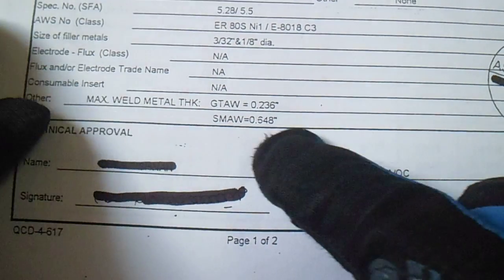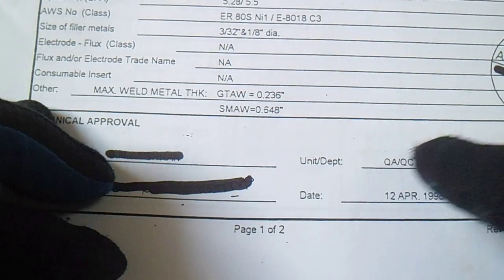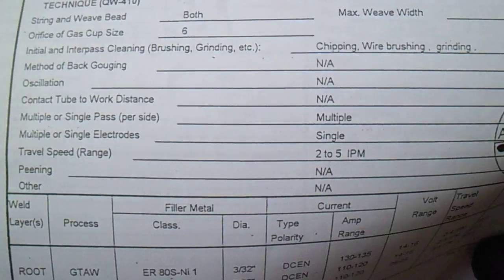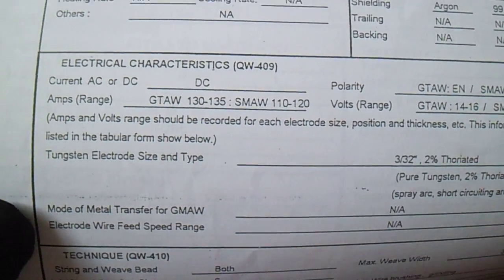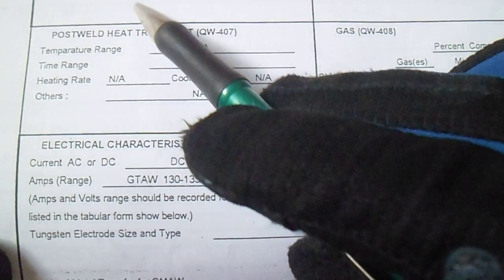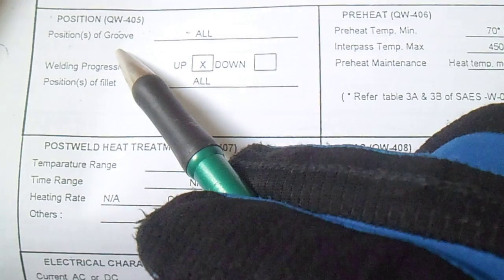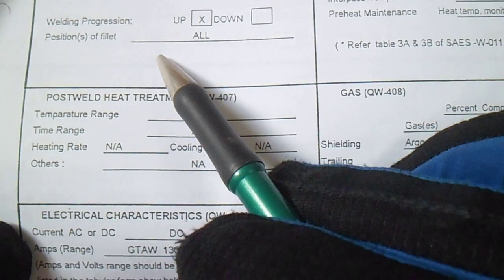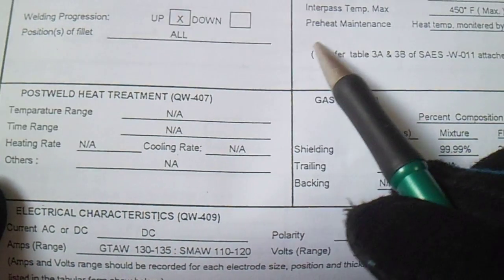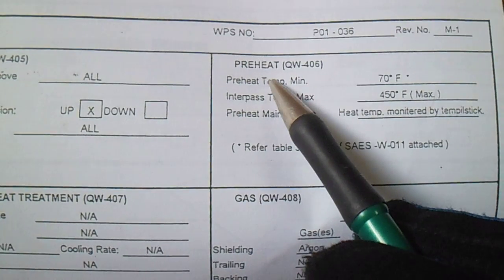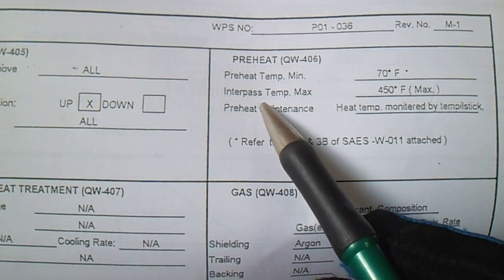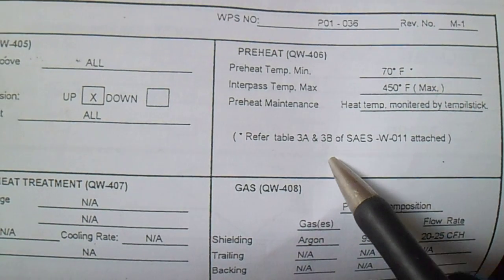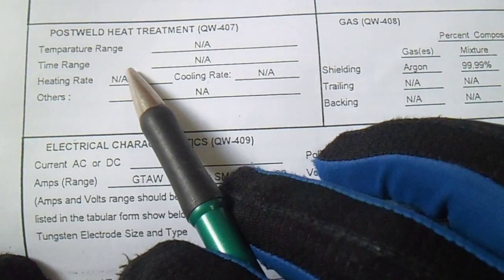Technical approval is by a quality control welding inspector. The welding position is all positions — 1G, 2G, 5G, 6G — and fillet all positions. Preheat temperature is 70 degrees Fahrenheit minimum, and the maximum interpass temperature is 450 degrees Fahrenheit.